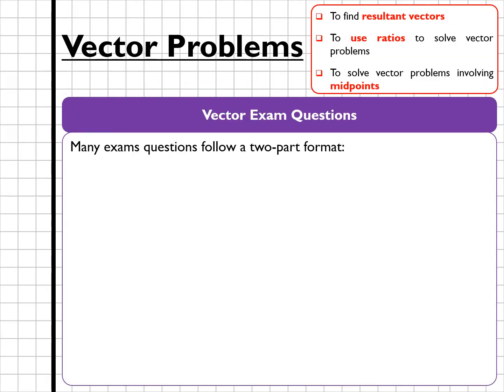Now, most of your vector exam questions are going to follow a two-part format. The first part is going to be finding a relatively easy vector, and the second part is going to be finding a harder vector that uses a ratio of the vector you found in part A.